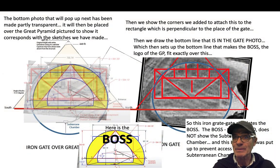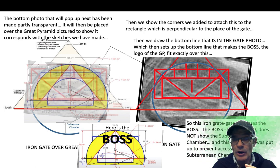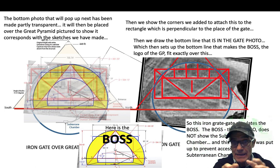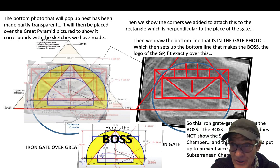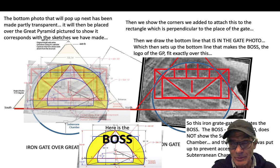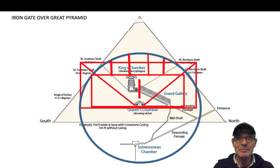What's interesting about the boss is that it doesn't have the subterranean chamber. The boss is a diagram in miniature of the entire pyramid, but the subterranean chamber is not there. It's interesting that this iron gate was placed by the director of antiquities, Maspero, to keep people from going into the subterranean chamber. Another unbelievable connection.